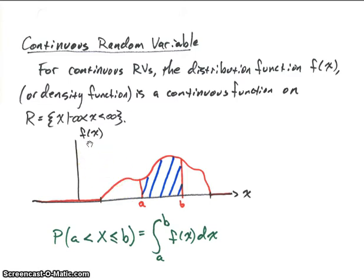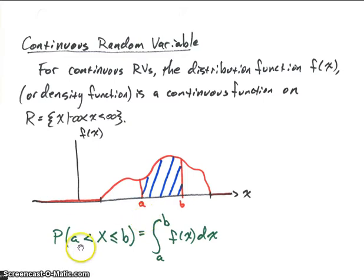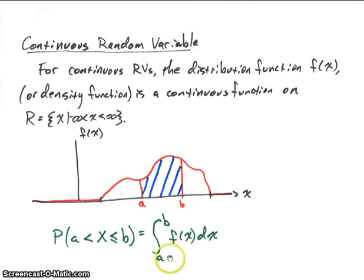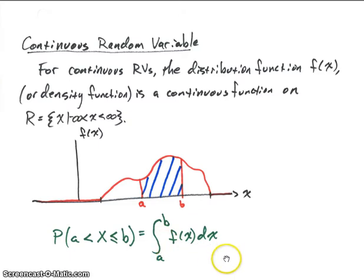If you look at this function f of x, notice that it's a continuous function. It doesn't have jumps or discontinuities. If we wanted to calculate some probabilities, suppose we wanted to know the probability that x was between lowercase a and lowercase b — we find that by doing an integral of the function from a to b. As opposed to a discrete random variable where we would do a summation, here we integrate this continuous function from a to b.